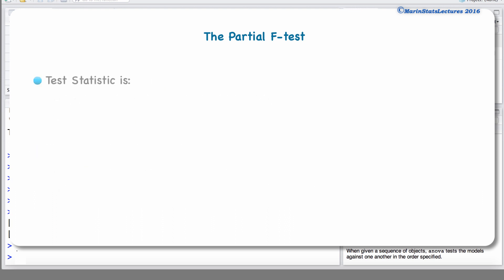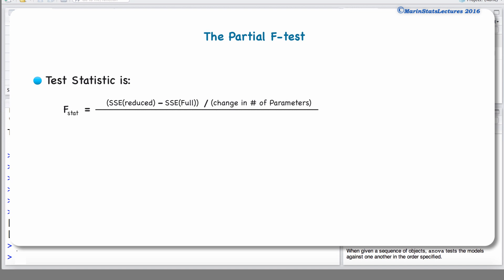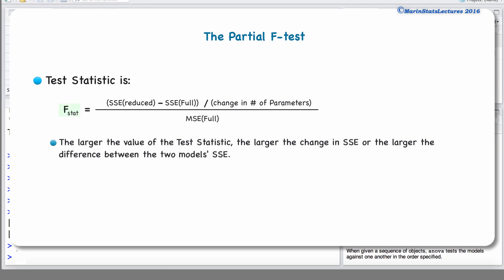Our test statistic looks as follows. We can see that it takes the difference, or the change, in sum of squared error from the reduced model to the full model, and this is divided by the change in the number of parameters in the model — the number of terms dropped from the model — divided by the mean squared error for the full model. The larger the value of the test statistic, the larger the change in sum of squared error, or the larger the difference between the two models.